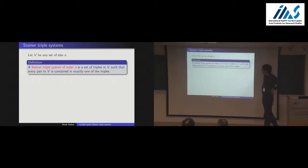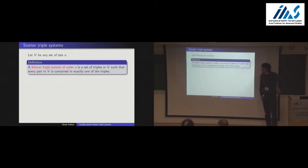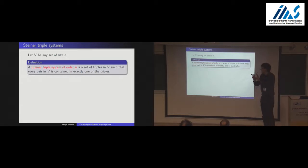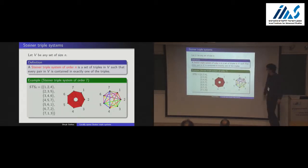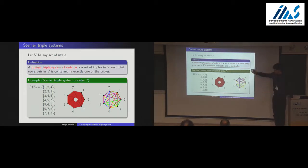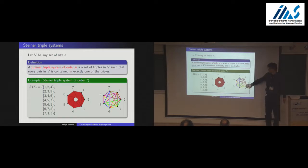A Steiner triple system on a set of size N is a set of triples such that if you have two triples they only intersect in one point, and every pair is contained in exactly one of these triples. Here's an example of a triple system of order 7. It's also useful to think of a Steiner triple system as a triangle decomposition of the complete graph on N vertices.